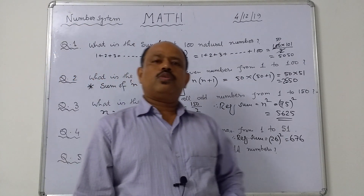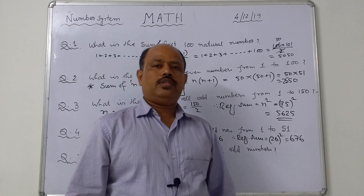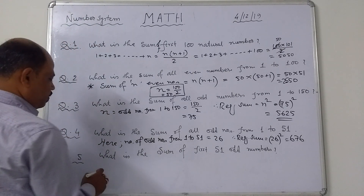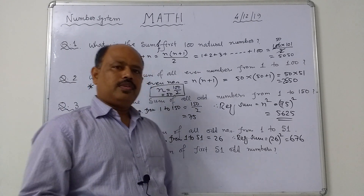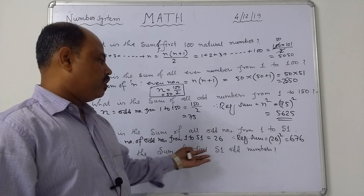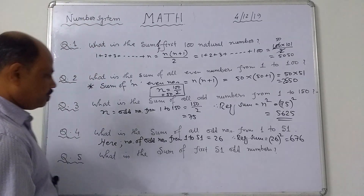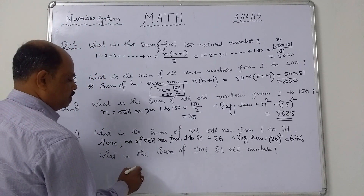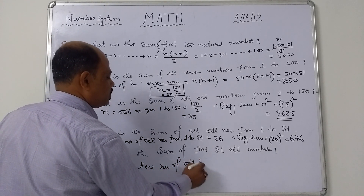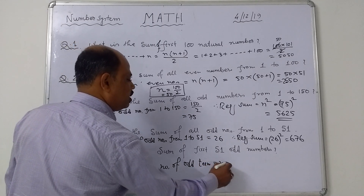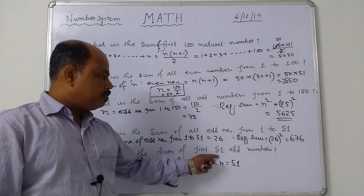Question number 5: what is the sum of first 51 odd numbers? Read the question carefully — you have to think about it clearly. The number of odd numbers is already given in the question as 51, because it says first 51 odd numbers.